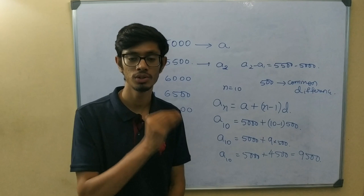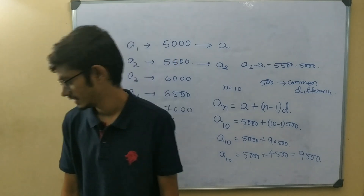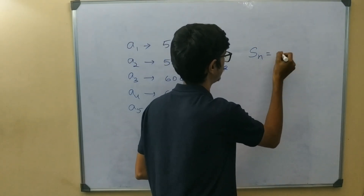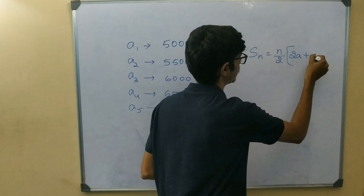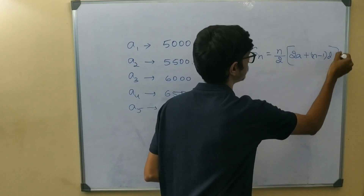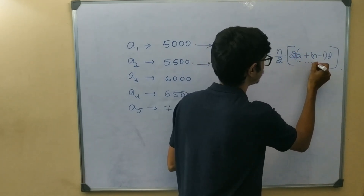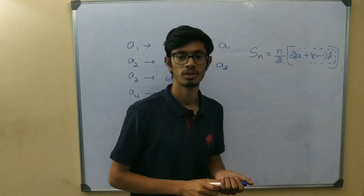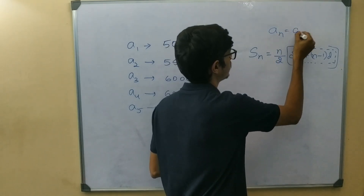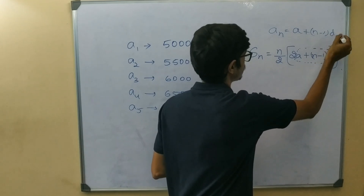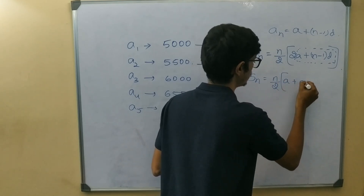Now let's find the addition of everything — the sum. The formula for the sum of n terms is: Sn is equal to n divided by 2 into 2a plus n minus 1 into d. Notice that inside this formula you can also spot the nth term formula: a plus n minus 1 into d. Alternatively, Sn equals n divided by 2 into a plus an.